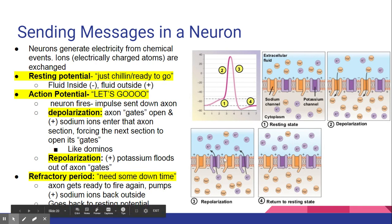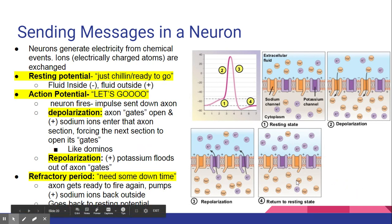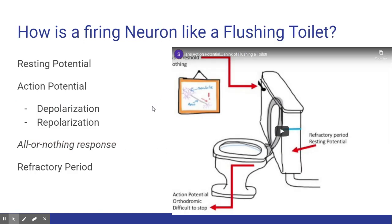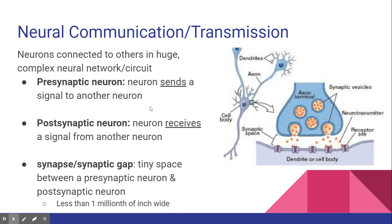After depolarization, repolarization occurs — the neuron has to rebalance back to the way it was. Potassium floods out of the axon gates, eventually returning the neuron to its resting state. During the period where it hasn't quite reached resting potential yet, it's in the refractory period — it cannot fire again until it returns to resting potential. I recommend watching the toilet analogy video referenced in class; it does a great job explaining this process.